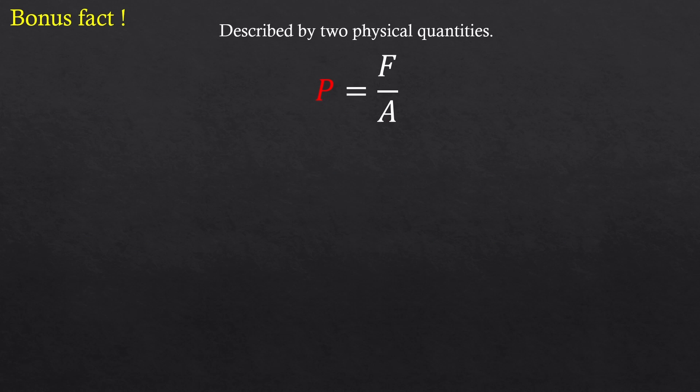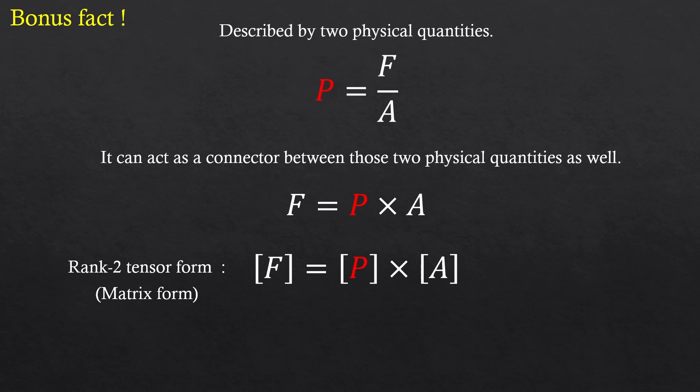This is a bonus fact about the tensor. If this tensor is described by the two physical quantities, that means that tensor can act as a connection bridge between those two physical quantities as well. If we write this in the rank 2 tensor form or the matrix form, it should look like this, right? And from linear algebra, we also call this a transformation matrix or a transformation tensor. You remember?